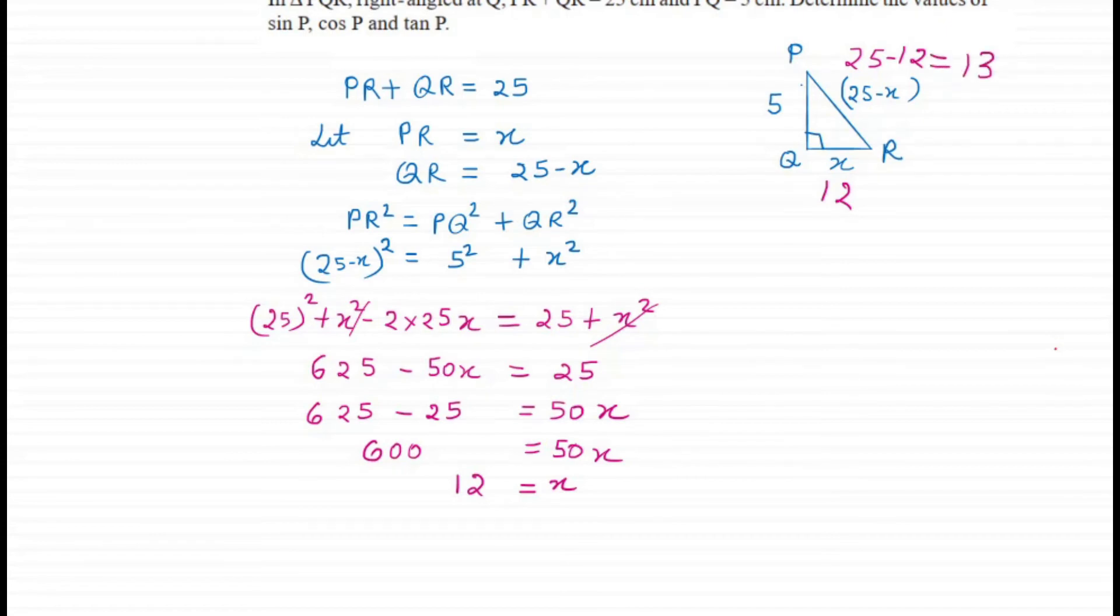Let's roughly draw another triangle. This is 5, this is 12, and this is 13. Label the vertices as well: P, Q, and R.